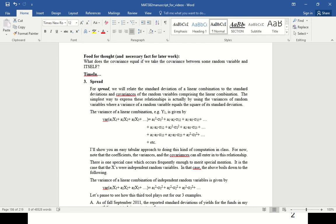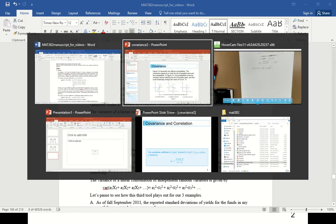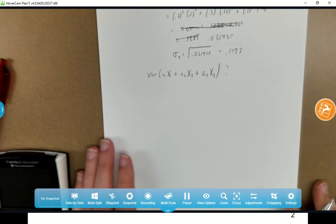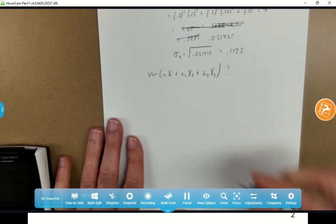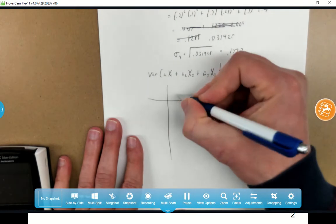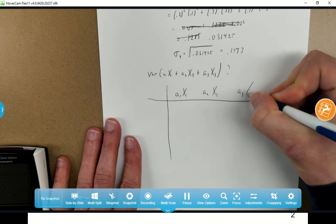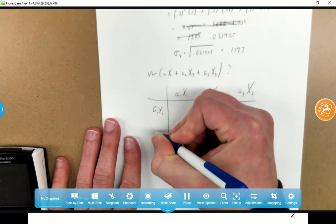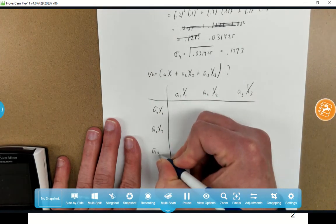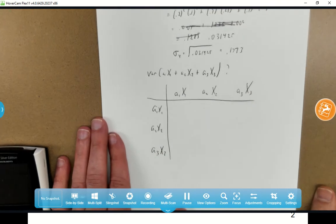Let's suppose that we want to find the variance of A1 X1 plus A2 X2 plus A3 X3. I'll show you a nice little way that you could do this. What you can do is make a little chart: A1 X1 up here, another column A2 X2, and A3 X3. Then down the side: A1 X1, A2 X2, A3 X3.